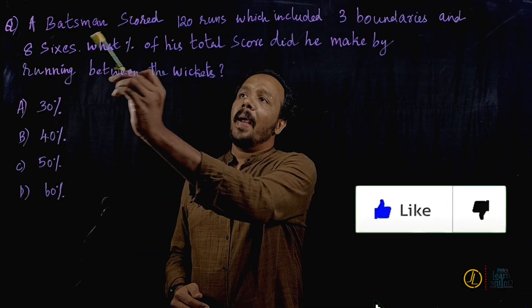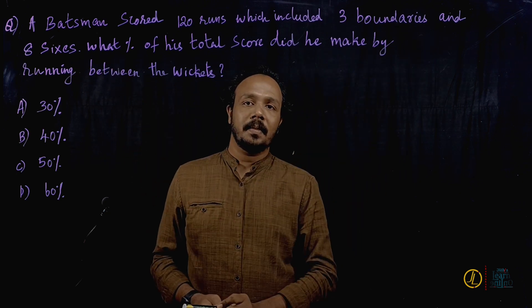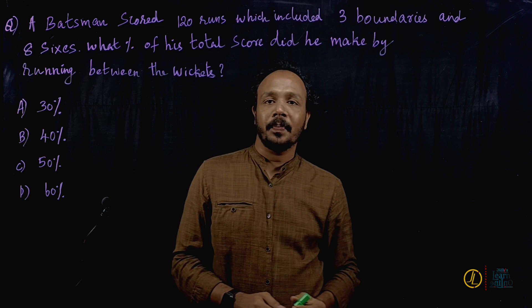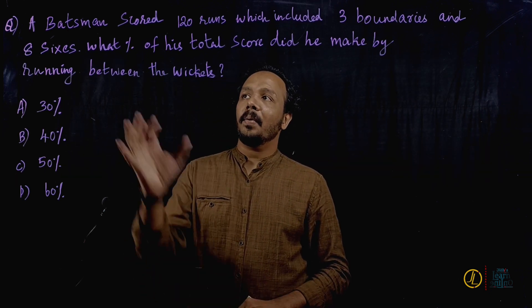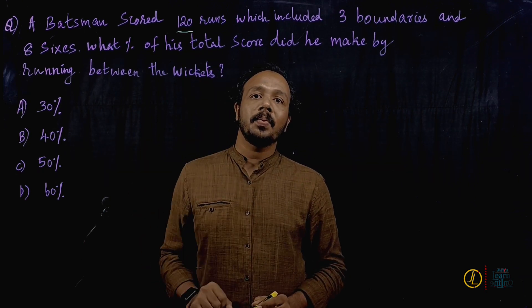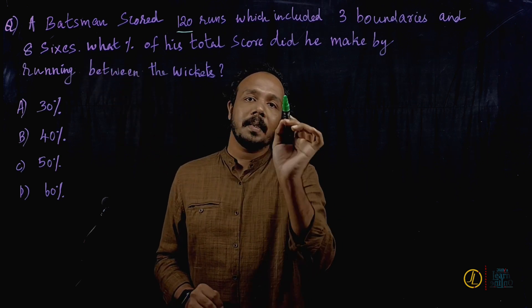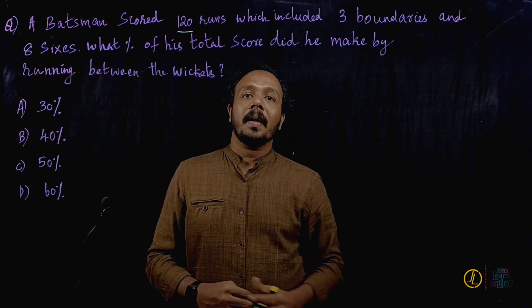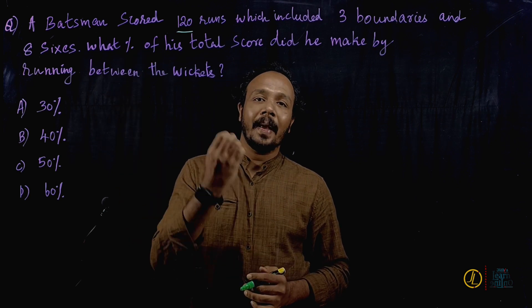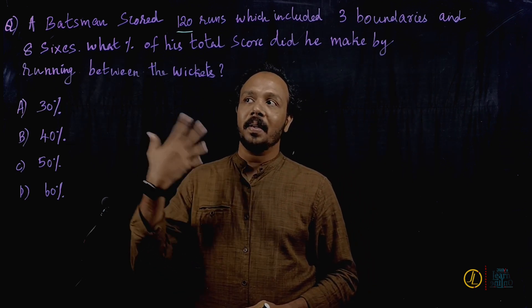The next question: a batsman scored 120 runs, which included 3 boundaries and 8 sixes. What percentage of his total score did he make by running between the wickets? A batsman scored 120 runs — there are 3 boundaries, meaning 3 fours, and there are 8 sixes. The highest score difference is 3 points. He scored by boundaries and sixes, so we skip those and calculate the rest.